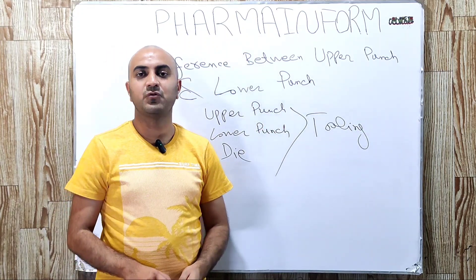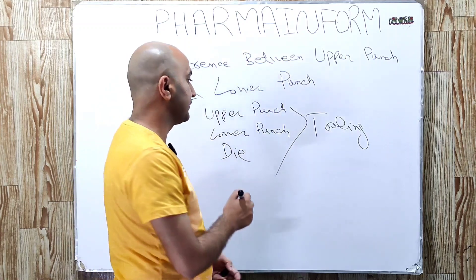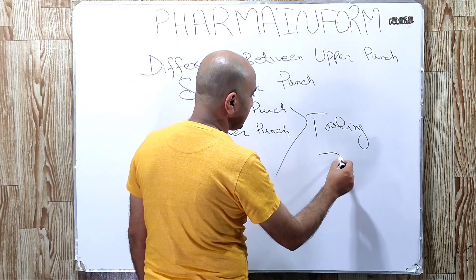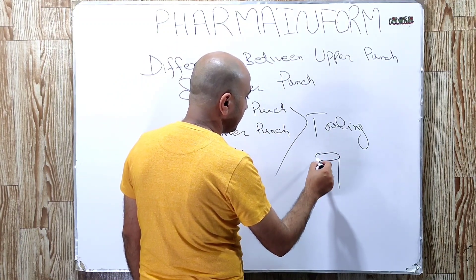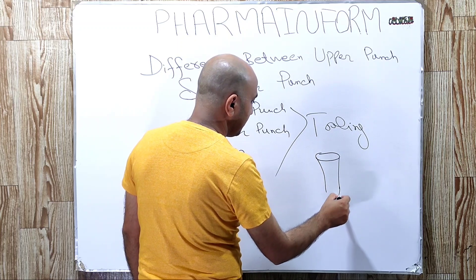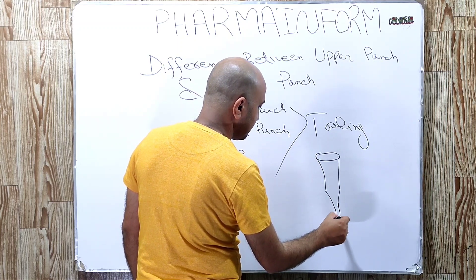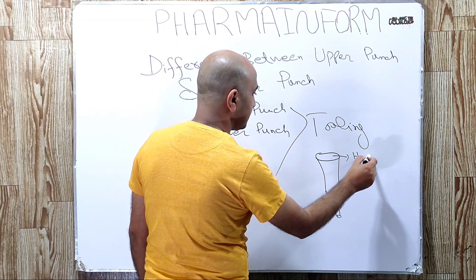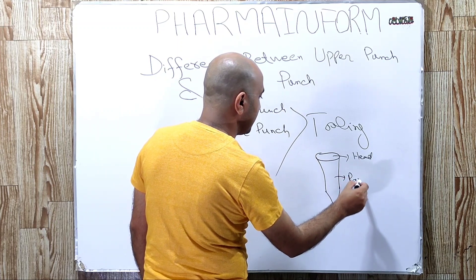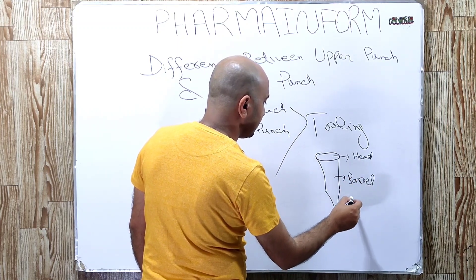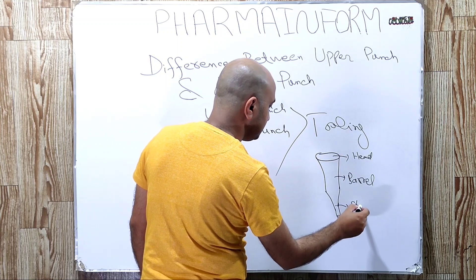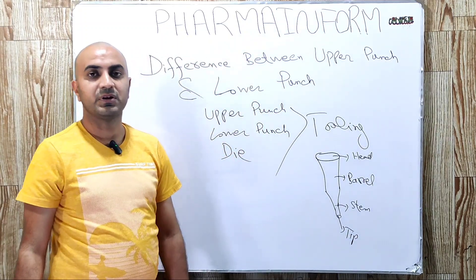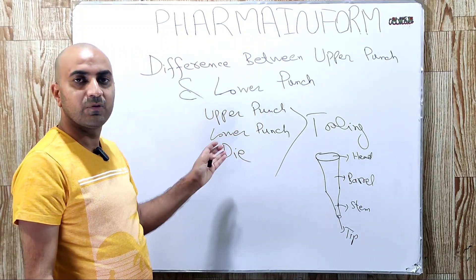That is why we will try to learn the difference between upper punch and lower punch, because many of us are not familiar with this difference. A punch usually consists of four parts. If we have a look over the rough diagram of a punch: the first part is the punch head, second one is the punch barrel, third one is the punch stem, and fourth one is the punch tip.